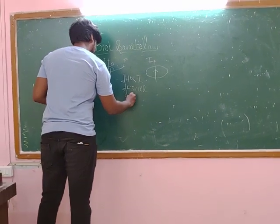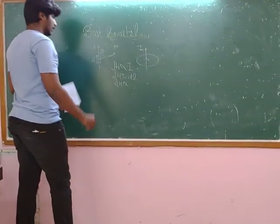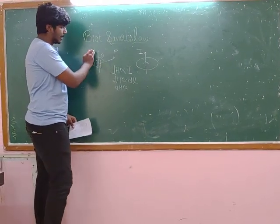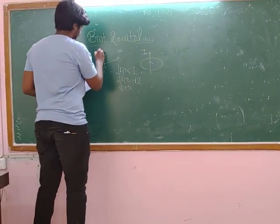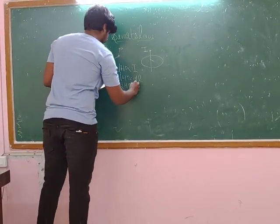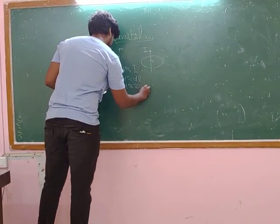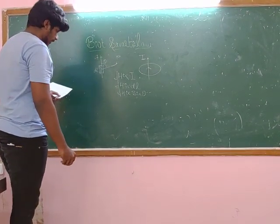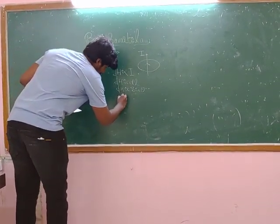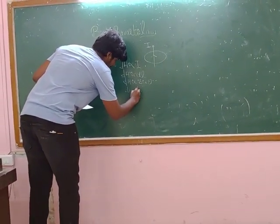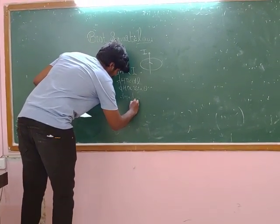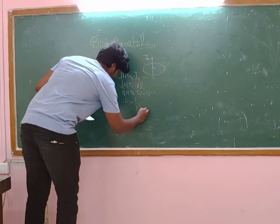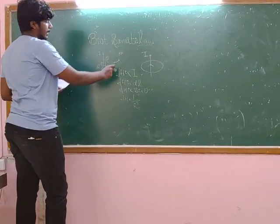dB is also directly proportional to sine theta, which is the angle between the point and current element. Also, dB is inversely proportional to the square of the distance r between the conductor and point.